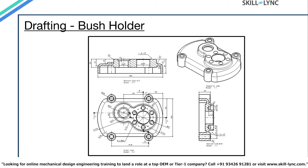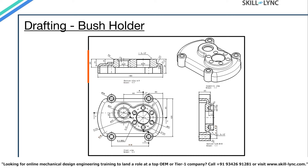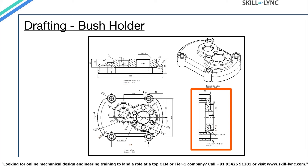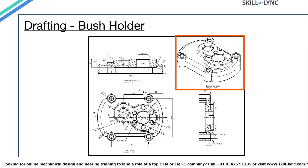Let's look at the next slide, which is showing the drawing of the Bush Holder part body that we designed. As we can see in the drawing, there is a top view at the bottom left side. There is a section view AA that cuts the top view through the centers of the two bushes. On the right side is another section view BB that cuts through the center of Bush 2 and the center of one of the corner bushes. On the top right corner is the isometric view. All the required dimensions are shown in the top view and the section views. A designer and/or a manufacturer should be able to deduce all the dimensions required to make this model from this drawing.